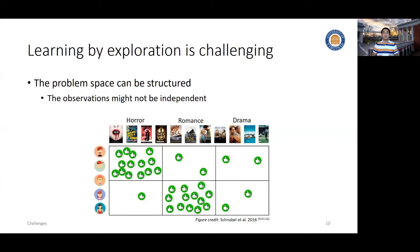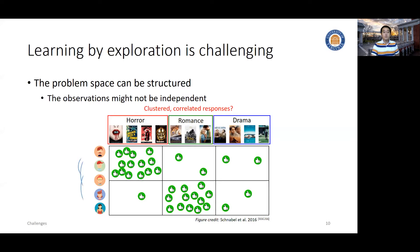Another important factor that makes exploration challenging is that observations we get might not be independent. Movies could be clustered by genre, directors, or leading actors. As a result, the user-provided feedback might be highly correlated across those movies. Even the users themselves might not be independent as they influence each other. Therefore, an efficient exploration strategy has to factor all this into consideration.